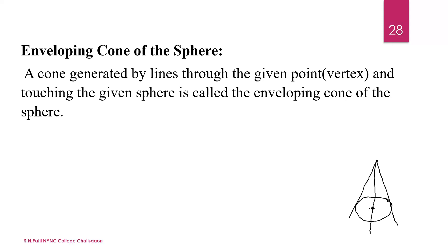Suppose this is point C, this is point B, and A is the vertex with coordinates Alpha, Beta, Gamma. The angle between the axis and the generator is theta, the semi-vertical angle.